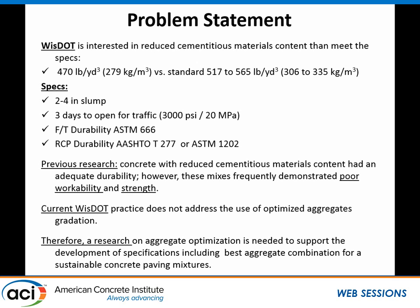The problem is Wisconsin DOT is interested in reducing cement content by 10%. Currently they're using about 520 to 565 pounds per cubic yard. They also need to meet requirements for workability, opening traffic in a short time, and durability. The reason we're focusing on aggregate packing is that previous research showed mixtures did not address poor workability, there was no attention to optimizing the aggregate blend, and many mixtures using supplementary cementitious material had low strength. If you want to use supplementary cementitious material with a low cement content of 280, you have to work on aggregate packing to get the most strength.